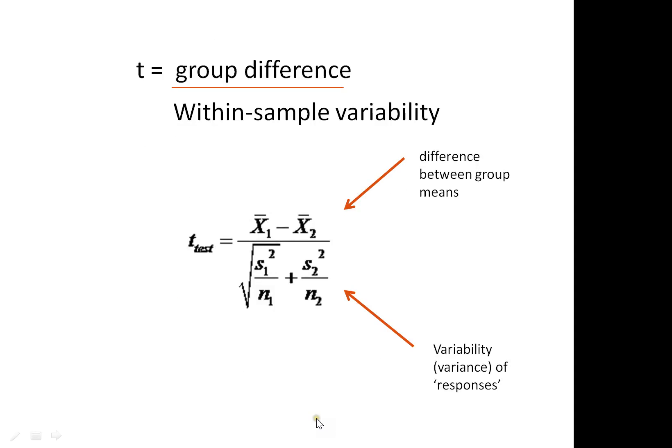The equation effectively reflects this. The difference between the two groups, in this case, the difference between the mean of group one taking away the mean of group two. We then divide that by a version of the within-sample variability. And the way we calculate that is by looking at the variance of group one, dividing it by the number of observations in group one, add the variance of group two, divided by the number of observations in group two, and then we take the square root, which has the effect of making that number smaller.